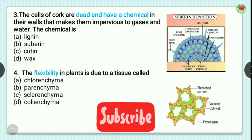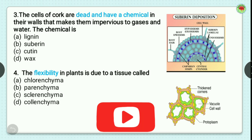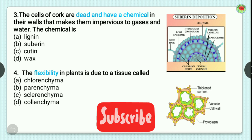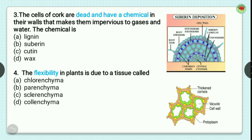Question number 3: the cells of cork are dead and have a chemical in their walls that makes them impervious to gases and water. The chemical is? Options are lignin, suberin, cutin, and waxin. In the image you can see suberin deposition on the cells of cork. So the correct option is suberin, option B.